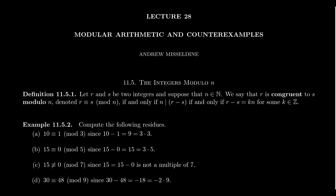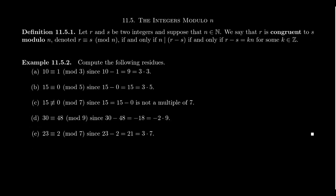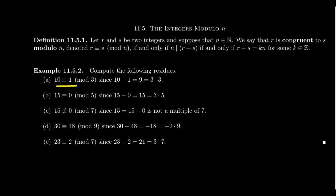Let's look at some examples. We can say that 10 is congruent to 1 modulo 3 because the difference between 10 and 1, which is 9, is divisible by 3 — specifically, 9 equals 3 times 3. Likewise, 15 is congruent to 0 modulo 5 because 15 minus 0 is 15, which is divisible by 5, giving us 3 times 5.